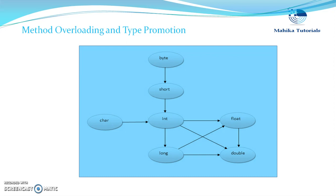Now in this tutorial we are going to see one more thing which is related to method overloading, and that is type promotion. When we give a call to a method, the compiler tries to look for a method with the same type of parameters which we are passing in the method call. But if it fails to find a method with the same type of arguments, then it internally performs some type promotions.